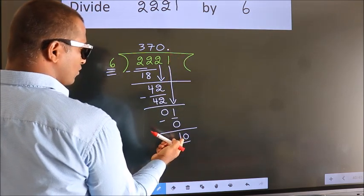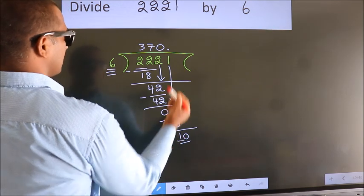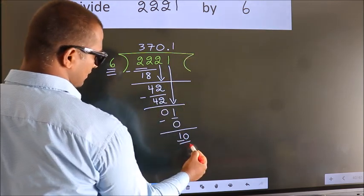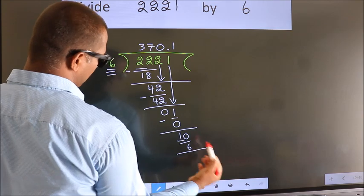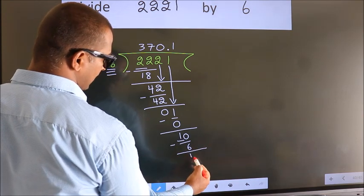A number close to 10 in 6 table is 6 once 6. Now we subtract. We get 4.